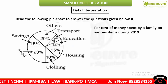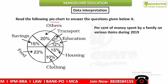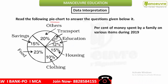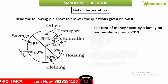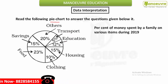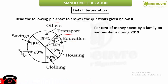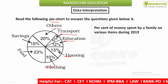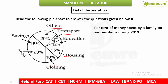Here it is given the percent of money the family has spent, and the items are: transport, other, education, housing, and clothing. Based on that we are going to see the questions.